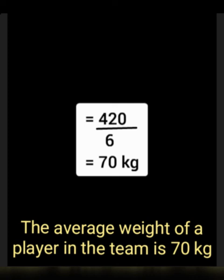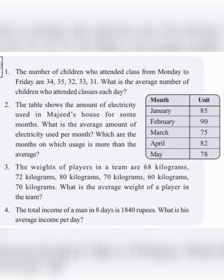The total income of a man in eight days is 1,840 rupees. What is his average income per day? We divide 1,840 by 8 and we get 230.